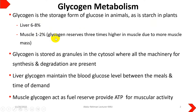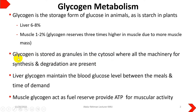However, since muscle mass is much higher compared to the liver, the overall glycogen reserves in muscle are higher in our body compared to the liver. Glycogen is stored as granules in the cytosol, meaning all the machinery required for synthesis or degradation of glycogen is present in the cytosol of the cell.